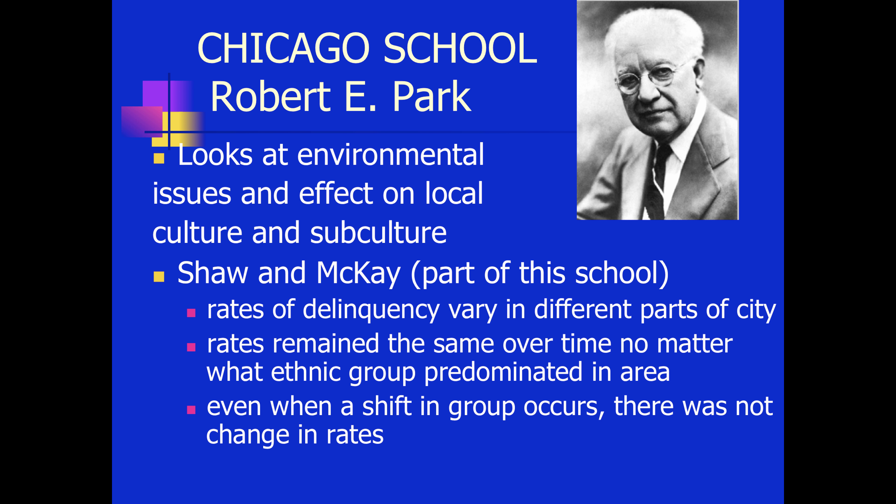What Shaw and McKay found, after studying delinquency rates in a certain area over time, was that even when the ethnic group moved away and a new group moved in, the delinquency rate stayed the same. This sparked the idea that delinquency rates were not part of the actual group's norms and values, but instead were somehow being influenced by factors associated with that area of the city.